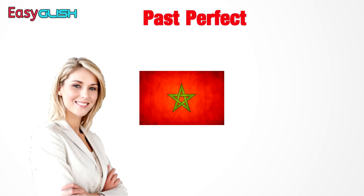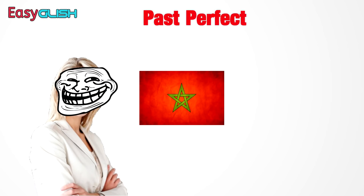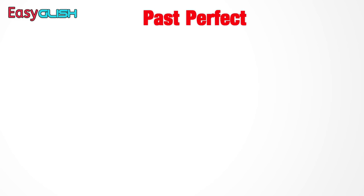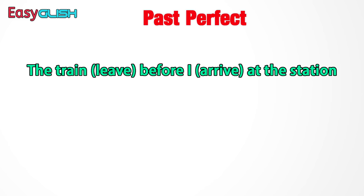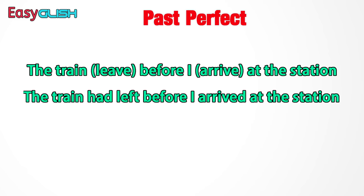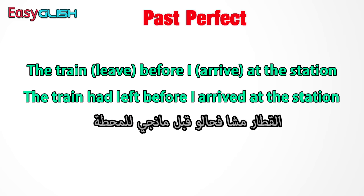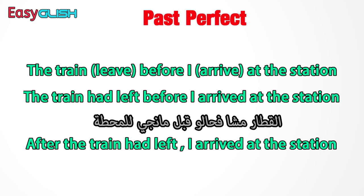نعطيكم another common example. أغلبية ديال الأساتذة ديال المغرب كيستعملوا هاد الأكزامبل. The train had left before I arrived at the station. خصك تفهم من الكونتكست: الترين مشا في حالو قبل ما نجي أنا للمحطة. نبدلو غير الـ structure: 'After the train had left, I arrived at the station.'